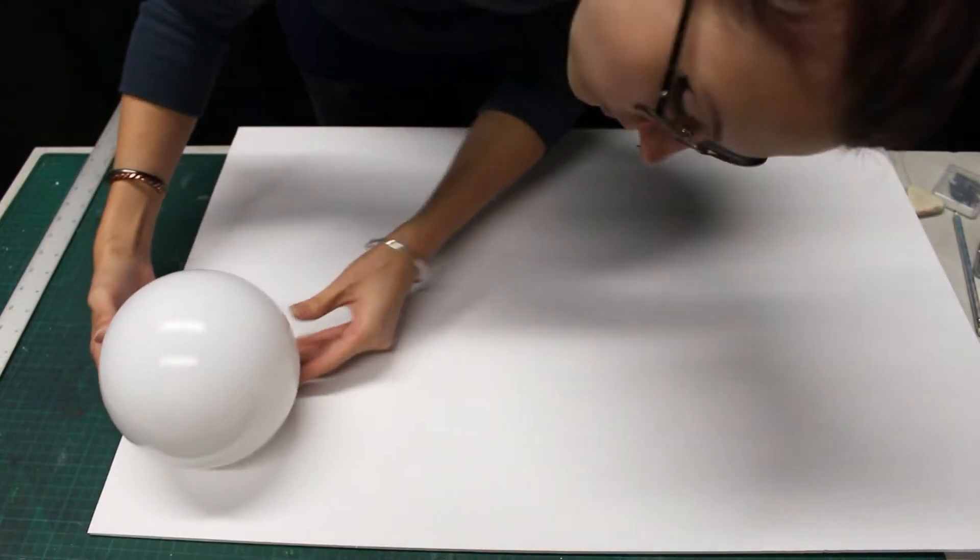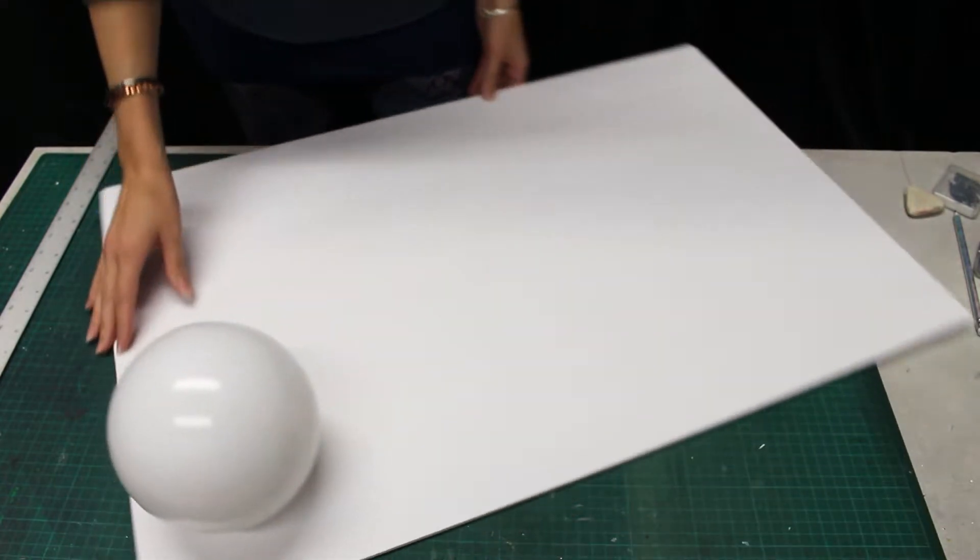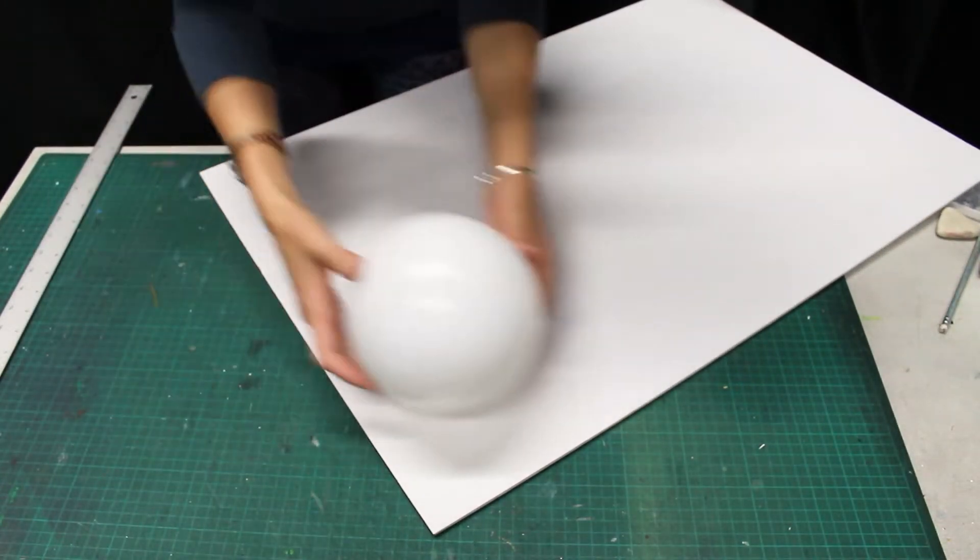Now I'm going to determine how large I would like my faux wood base to be. I personally chose eight inches by eight inches.